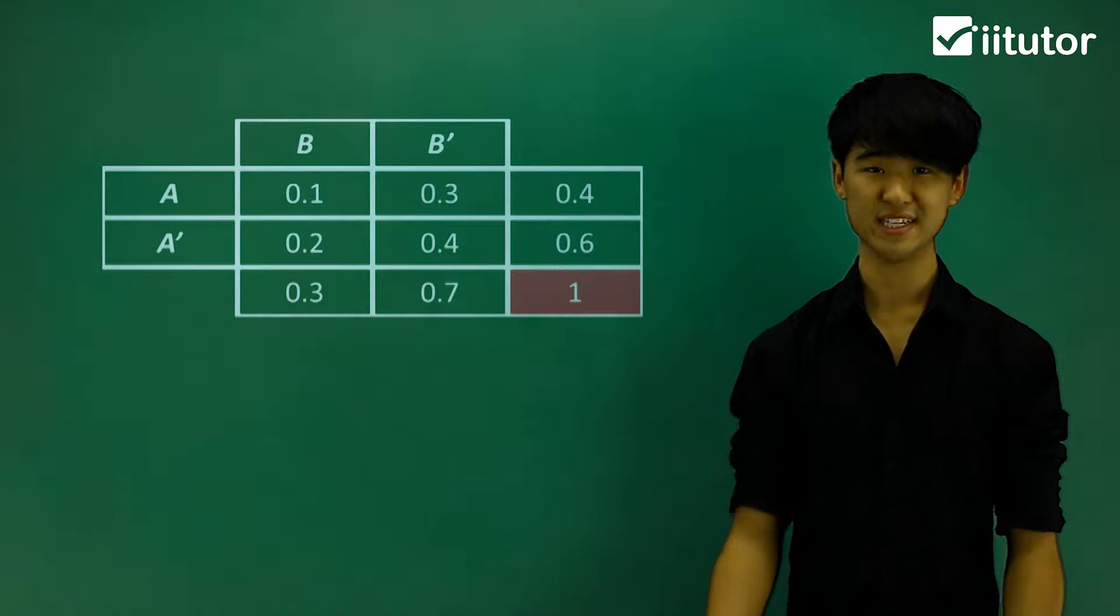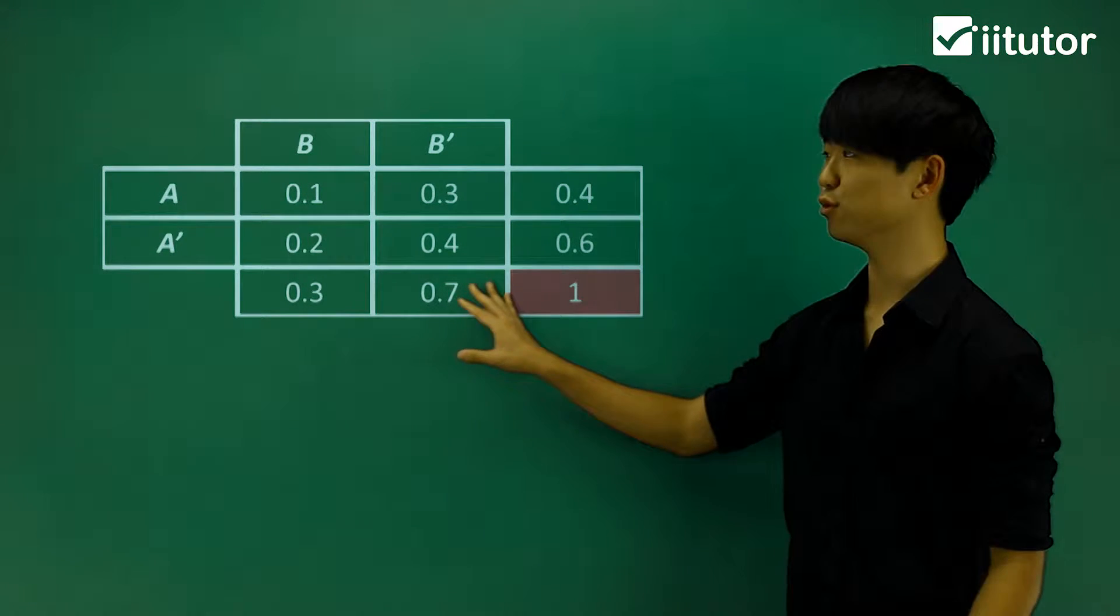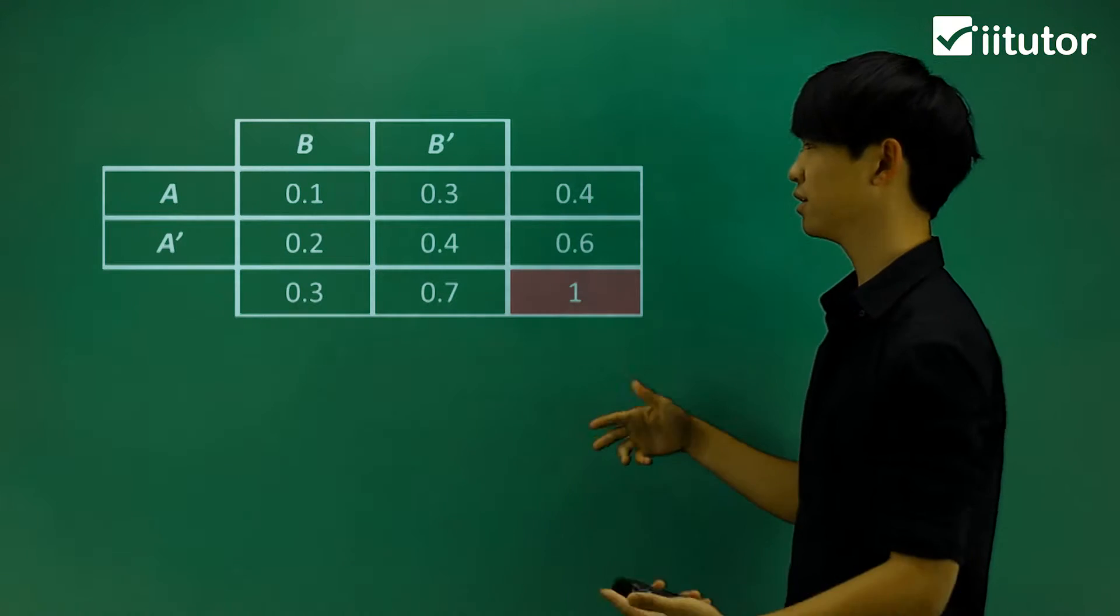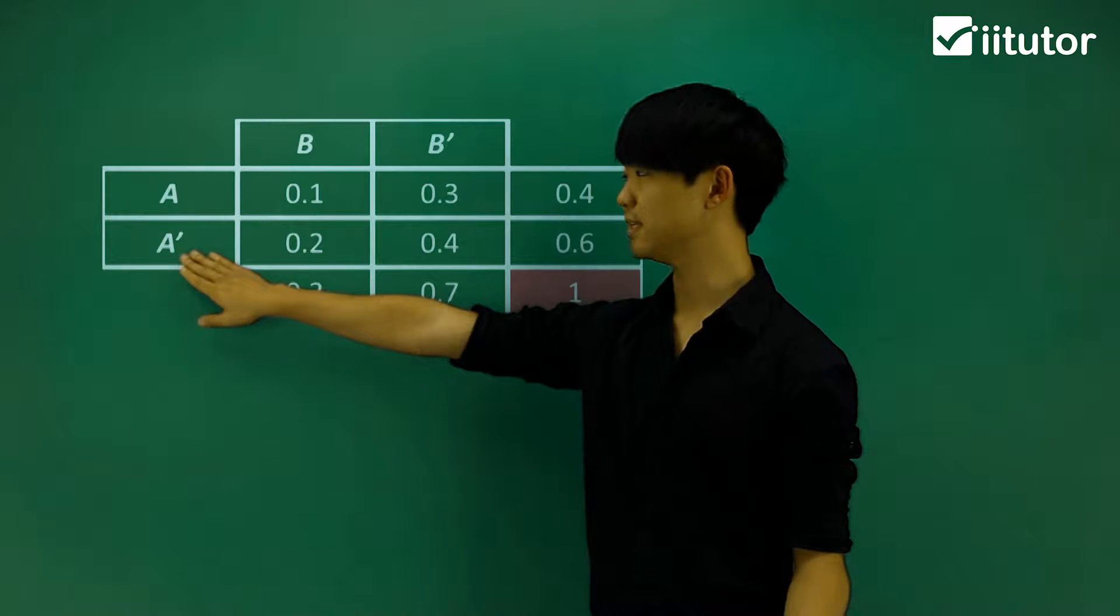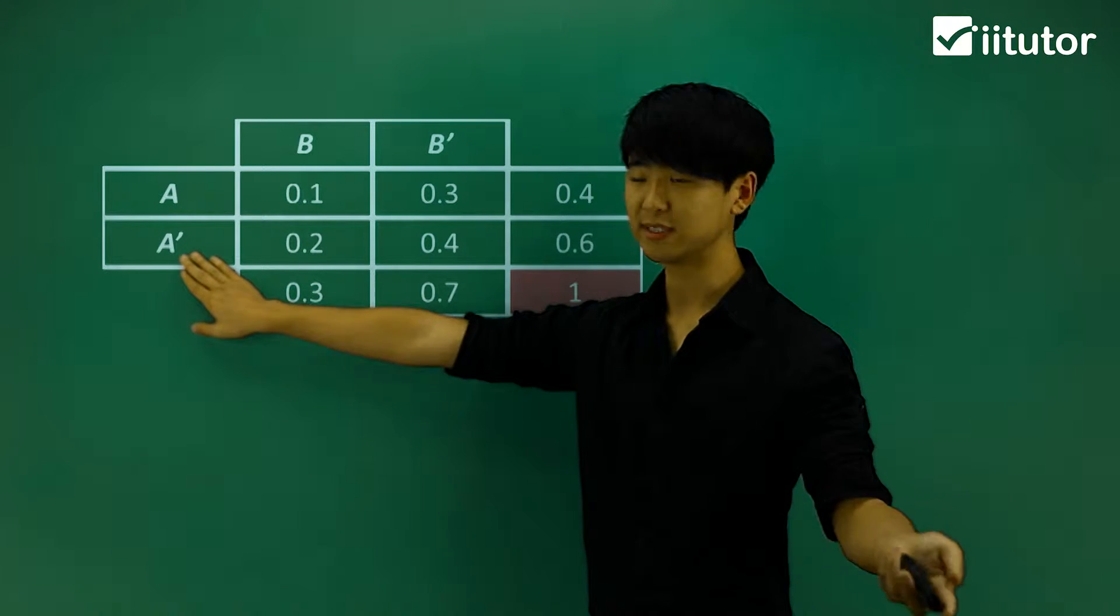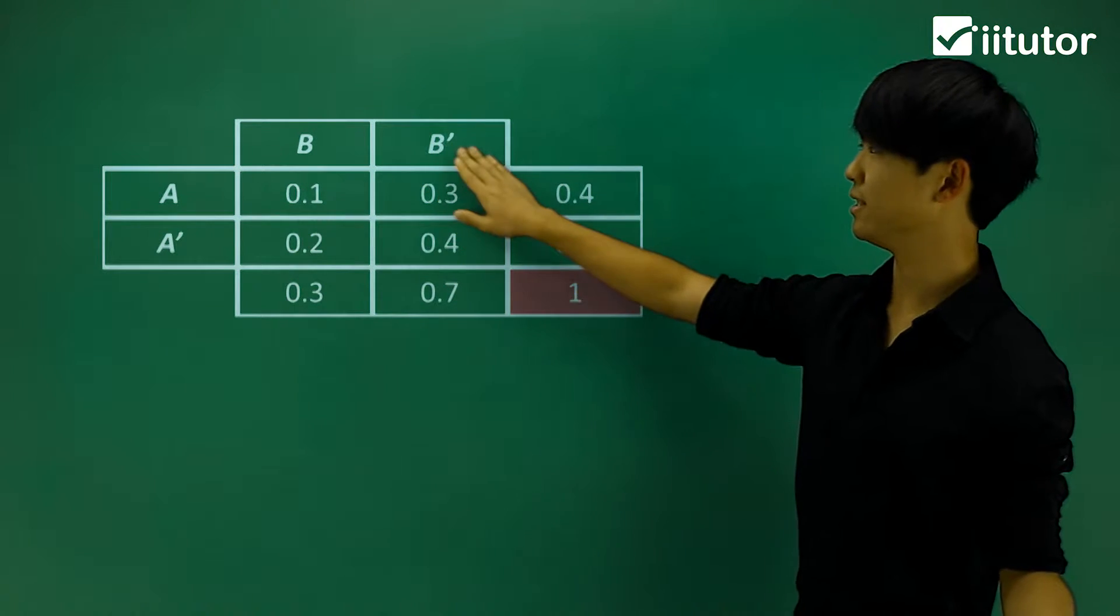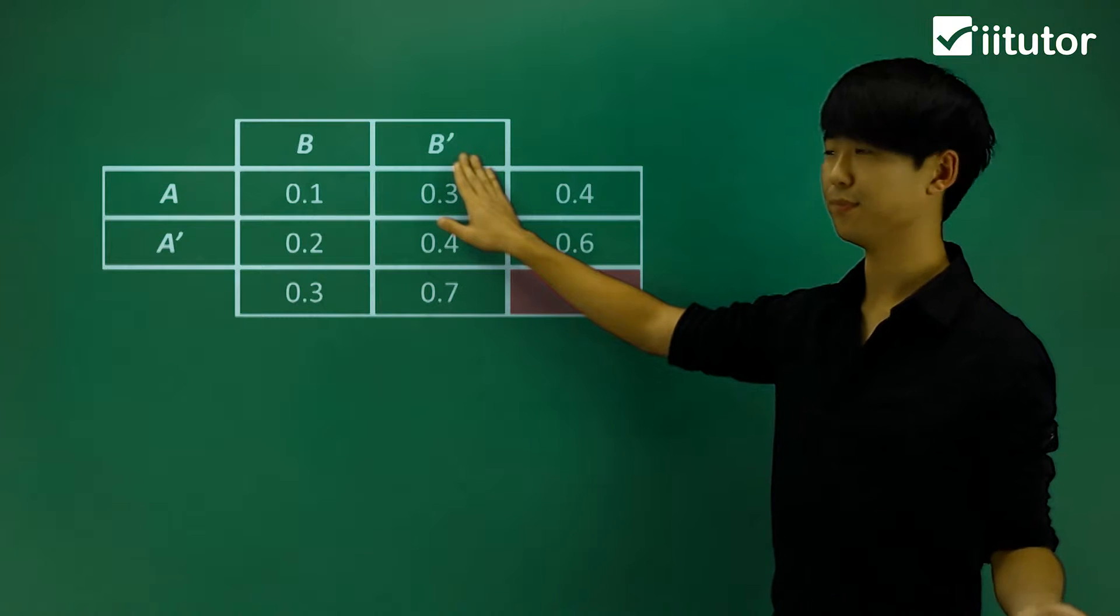We're going to be working with probability tables. This is an example of a probability table where I've got event A and event B. This is going to be the event that is complement to A, and so is this. This will be the event that is complement to B.